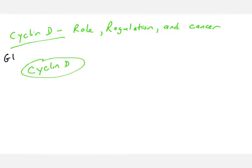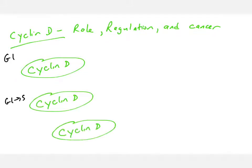The cyclin D protein's levels are typically very low in the G1 phase. Its levels rise when cells are getting signals to grow through, for example, growth factor receptor pathways. We'll talk about why those levels rise later in this video, but first I want to talk about the function of cyclin D — what does this protein do in the cell?